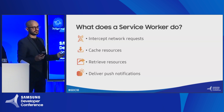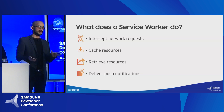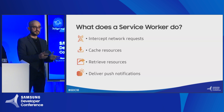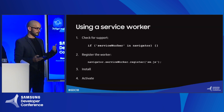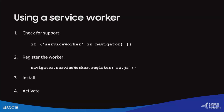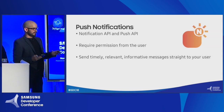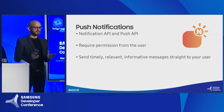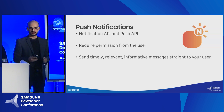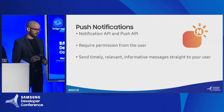A service worker is a special type of web worker responsible for intercepting network requests. It allows us to do offline caching — we can cache resources and retrieve them — and it helps deliver push notifications. To use it, you check for support, register the worker, then install and activate it. Related to this is push notifications, which are very important because they're a re-entry point for users. Just make sure you're using web notifications responsibly — don't ask for permissions the first time a user logs in to a website.